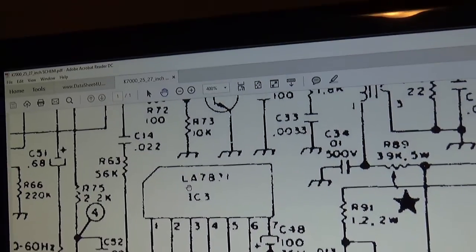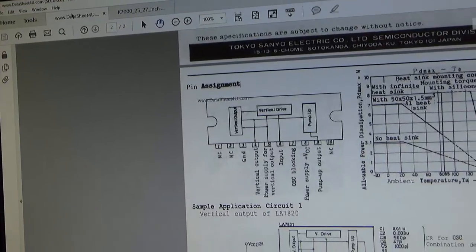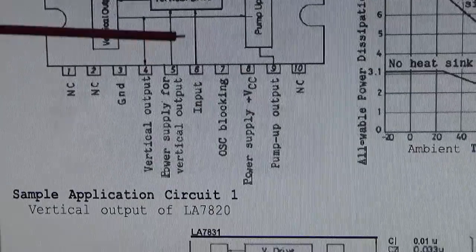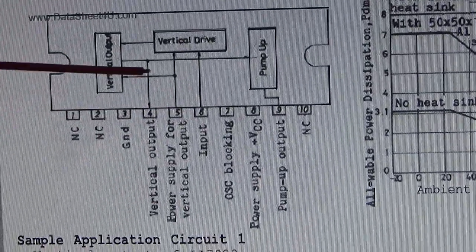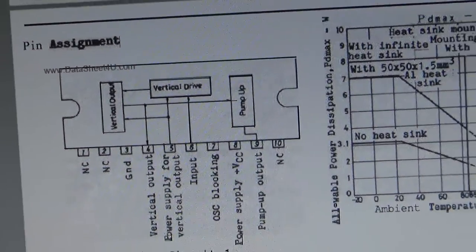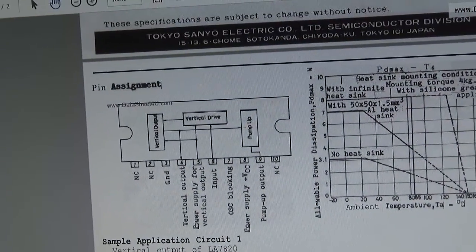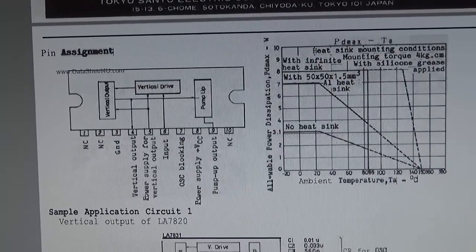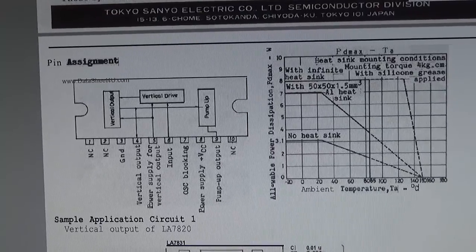And I know that because I've looked at the LA7831 pin-out data sheet, which clearly shows that pin six is the input and pin four is the vertical output. So you can look all that stuff up online, and that's the best way to probe chips and find out if they're working and trying to see what's going on. The easiest way is to check their voltages in and out and using an oscilloscope to monitor or check the signals on the way out.